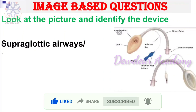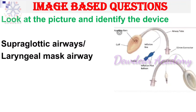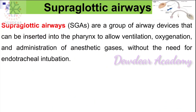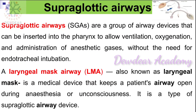The answer is supraglottic airways, or laryngeal mask airway, also known as LMA. Supraglottic airways are a group of airway devices that can be inserted into the pharynx to allow ventilation, oxygenation, and administration of anesthetic gases without the need for endotracheal intubation. The laryngeal mask airway is a medical device that keeps a patient's airway open during anesthesia or unconsciousness, and it is a type of supraglottic airway.